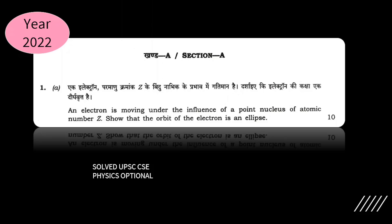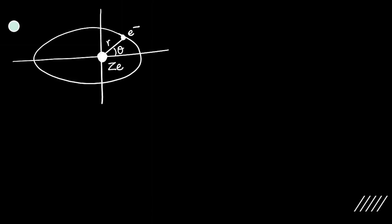Hello everyone. In today's video we will be solving one of the previous year questions. We are given an electron which is moving under the influence of a point nucleus having an atomic number Z. We have a nucleus around which an electron is moving, with a radial distance R making an angle theta with the X axis.